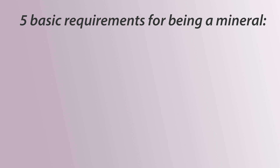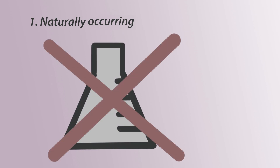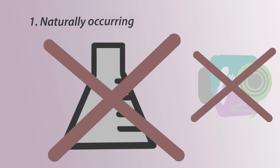There are five basic requirements that an object must meet to be classified as a mineral. First, it must be naturally occurring. This means it can't be made in a lab — man-made things like plastics wouldn't count as minerals.